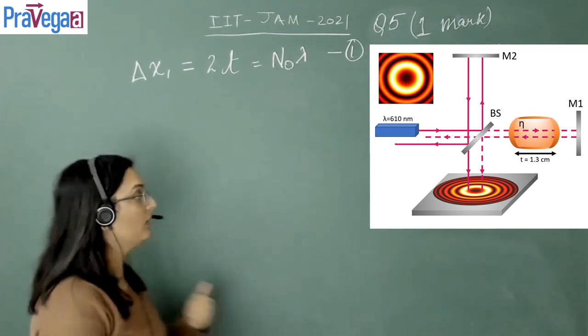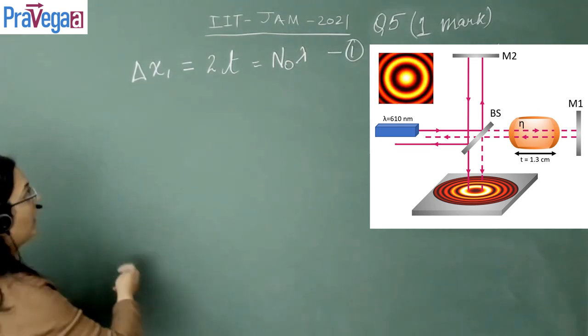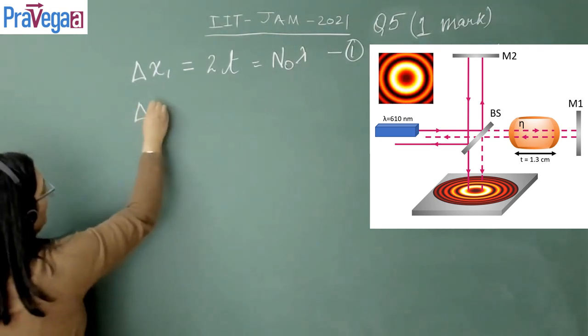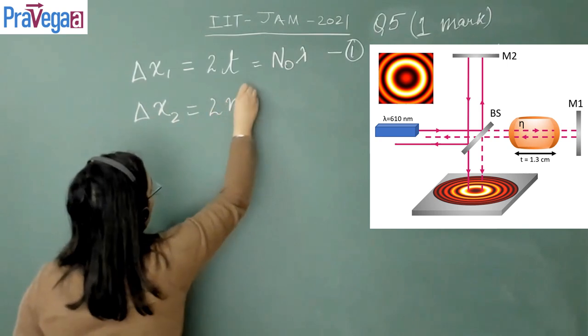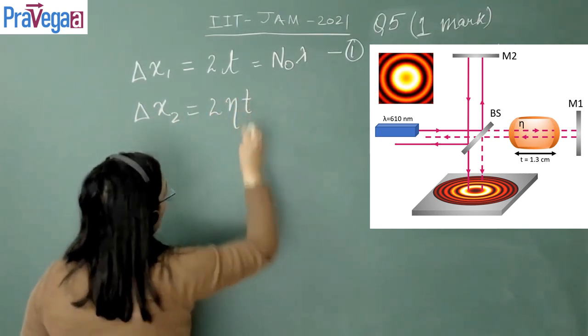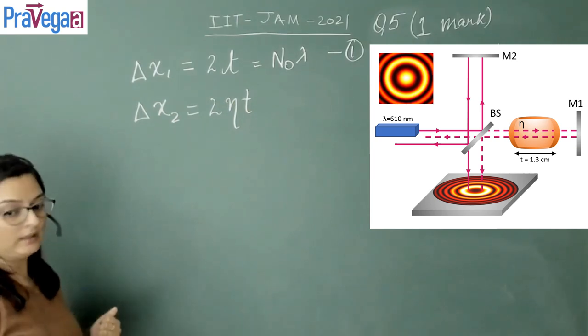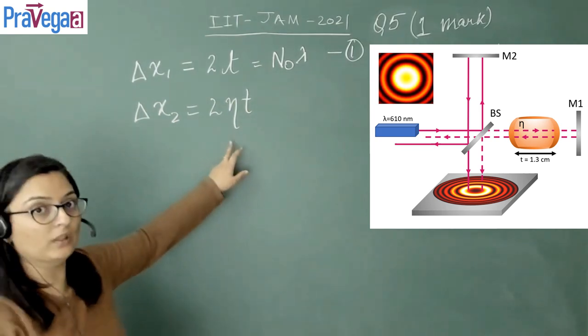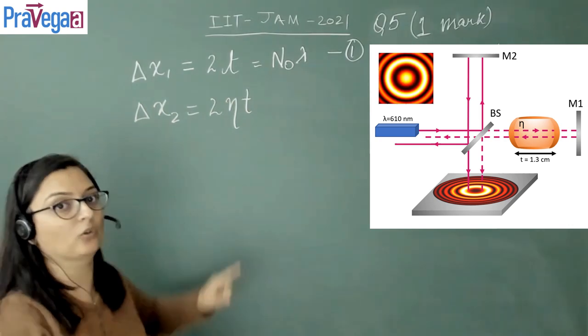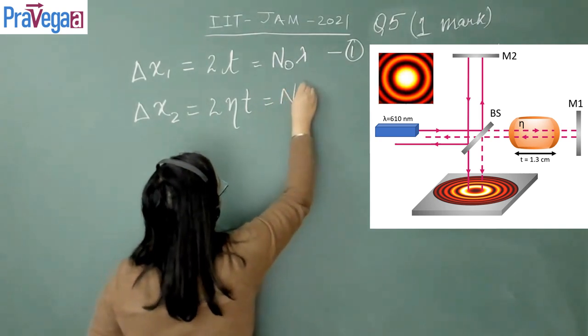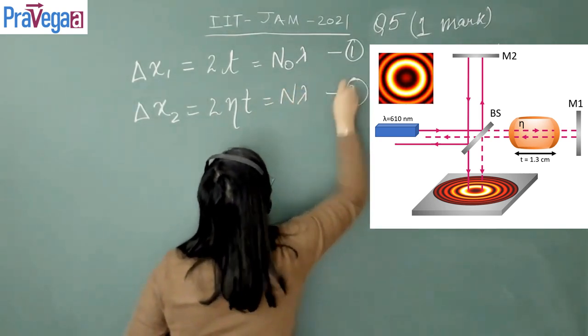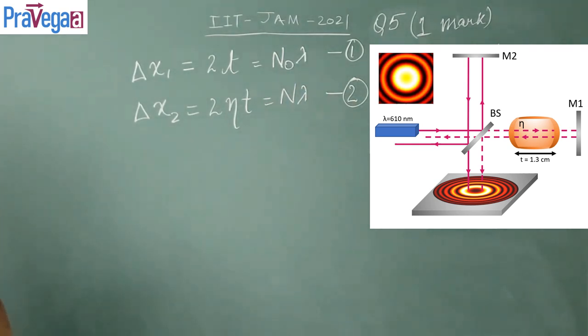When the cavity is completely filled with the medium, the path difference at that point is delta x2, which equals 2 eta t. Please note that now it is 2 eta t because there is a medium through which the light is traveling. This is n lambda, since after introducing the medium, the order of fringe has changed, so now we are giving it as n lambda.